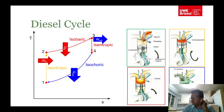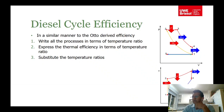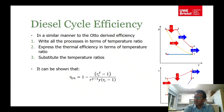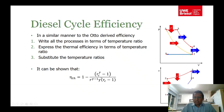We can calculate the diesel cycle thermal efficiency similarly to the Otto cycle. The result is: eta_thermal = 1 - [r_c^gamma - 1] / [r_v^(gamma-1) × gamma × (r_c - 1)], where r_v is the volume compression ratio and r_c is the cutoff ratio.